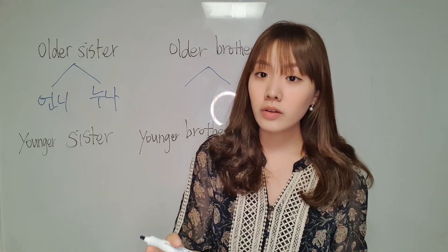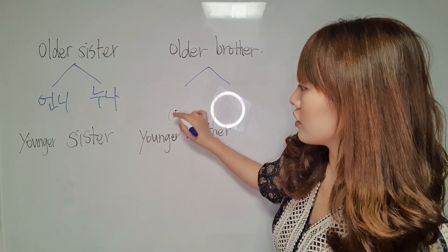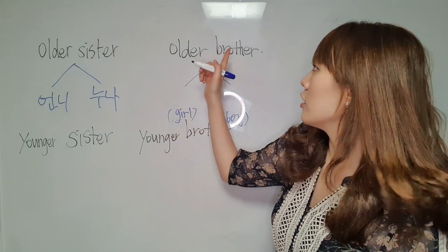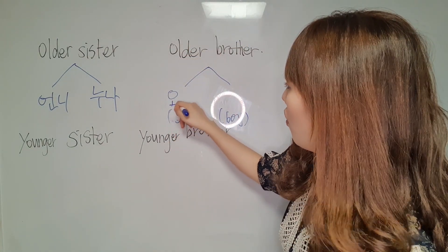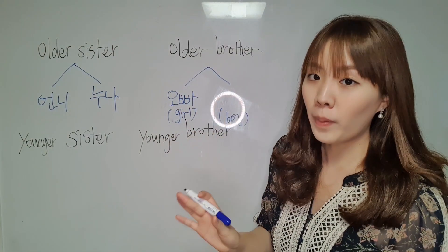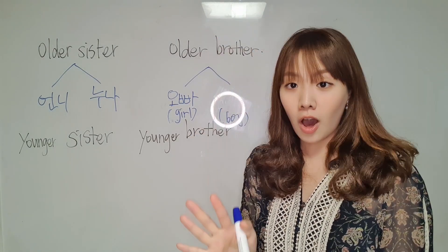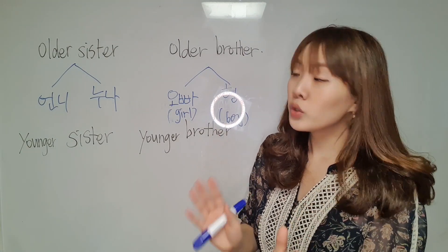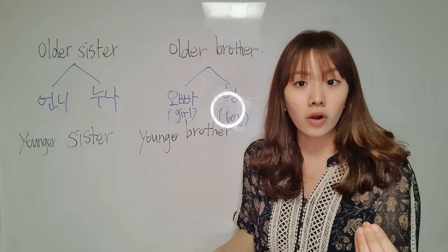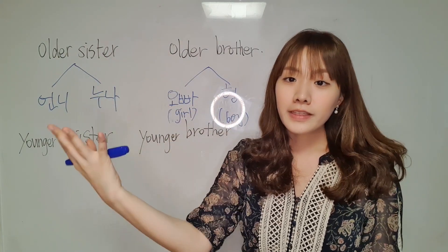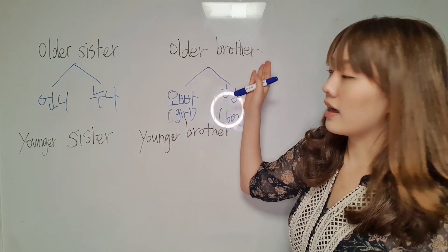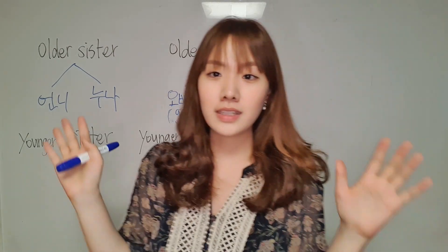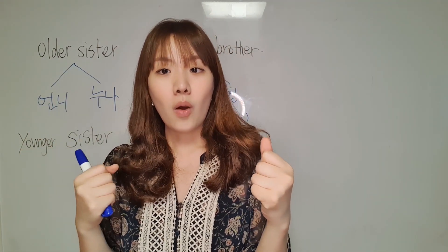When calling older brother, there are also two ways depending on your gender. If you're a girl and call your older brother, it's 오빠. If you're a boy and call your older brother, it's 형. So: older sister — 언니 (girl speaker), 누나 (boy speaker); older brother — 오빠 (girl speaker), 형 (boy speaker).